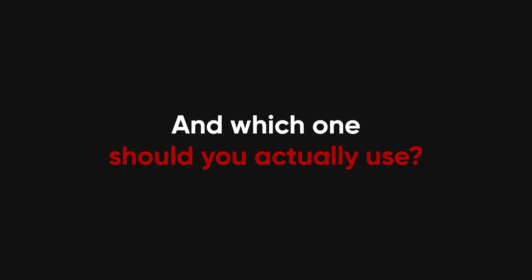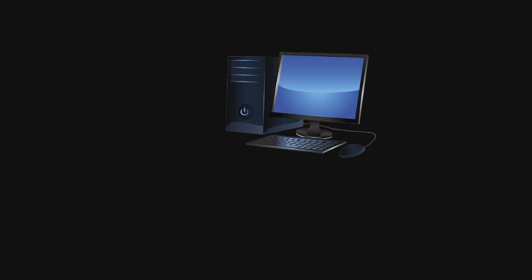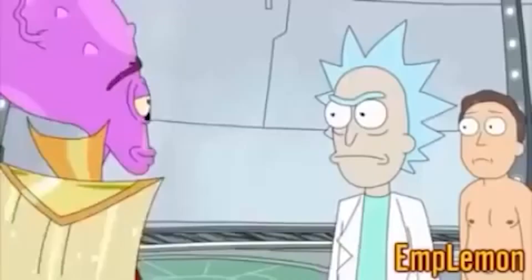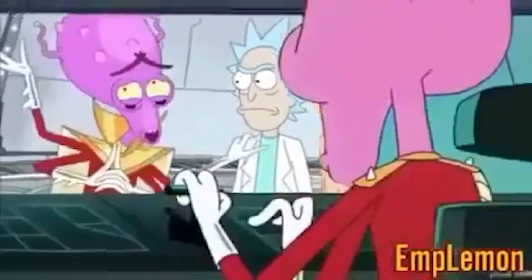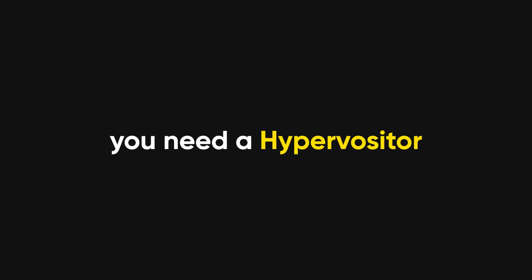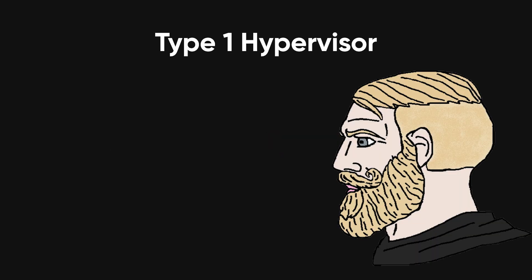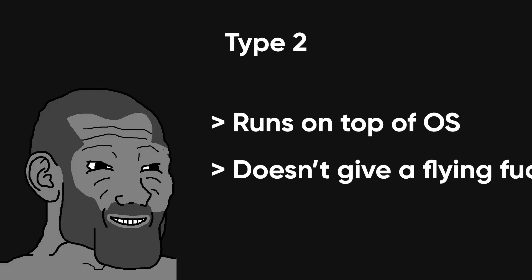Let's untangle this. Virtualization is basically running a whole other computer inside your computer — like Inception, but with operating systems. You use a thing called a hypervisor to do it. Either Type 1, which runs directly on the hardware like a boss — bare metal — or Type 2, which runs on top of your existing OS like a glorified app.